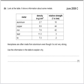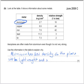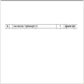Look at the table. It shows some information about some metals. Aeroplanes are often made from aluminium, even though it's not very strong. Use the information in the table to explain why. Aluminium has a low density, so the plane will be lightweight and use less fuel. The examiners never accept the word 'light' because that refers to the mass of the plane, which depends on how much aluminium goes into making it.